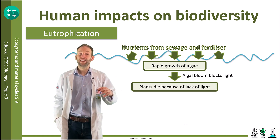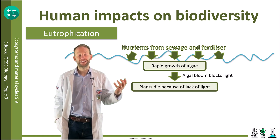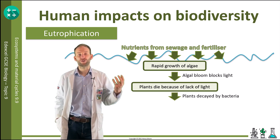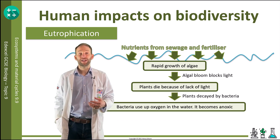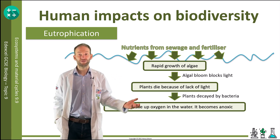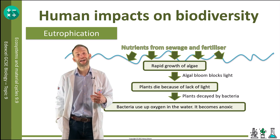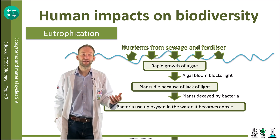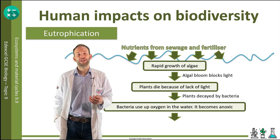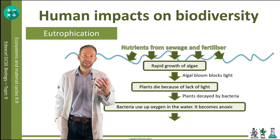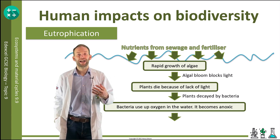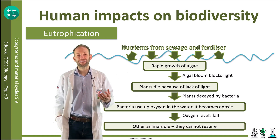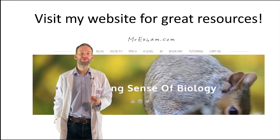When the plants die, they get decomposed by decomposing bacteria, which reproduce rapidly. You get billions of bacteria which then use up all the oxygen, and the water becomes anoxic. Without oxygen, the animals die as they can't respire. So we get this awful situation in these waterways because of the minerals that get washed in — eutrophication occurring.